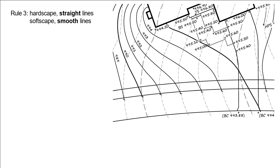Rule number three is about the shape of contours, whether they are on hardscape or softscape. So when a contour is running across pavement, whether it's concrete or asphalt or whatever, it is going to be a straight line. When the contour is running across softscape or landscape areas, they are going to be smooth curvilinear lines. This is always true.